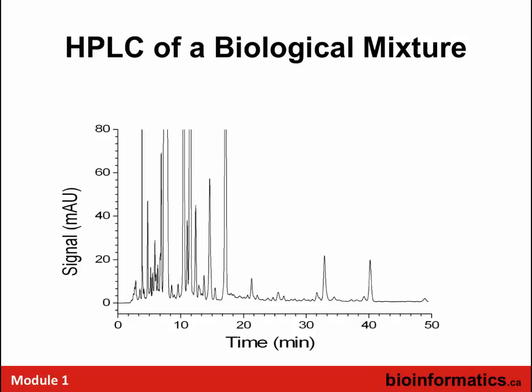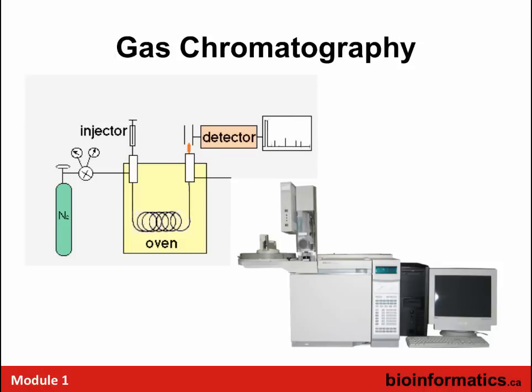HPLC runs typically take 20 to 40 minutes; UPLC runs can be 10 minutes or less. You can see dozens of peaks in a separation, but under each peak there may be several compounds or even hundreds in some cases. What we're seeing is typically absorbance — things with UV-absorptive moieties. Many other compounds don't have those, so there are hidden or unknown peaks not visible with this particular detection.